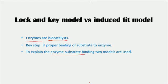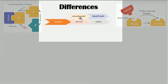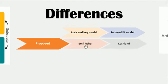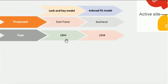Here is the Lock-and-Key model of enzyme, and here I have the Induced Fit model of enzyme. The first difference is that the Lock-and-Key model was proposed by Emil Fischer, while the Induced Fit model was proposed by Koshland. The second difference is that the Lock-and-Key model was proposed in 1894, while the Induced Fit model was proposed in 1958 — you can see the difference in the timelines.